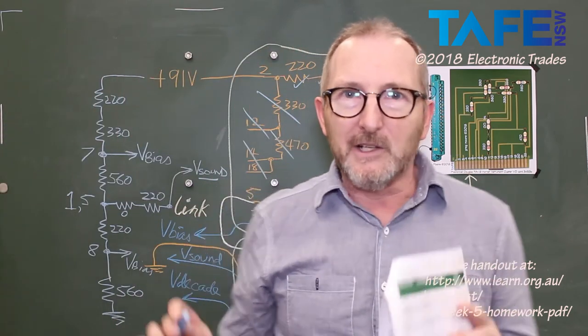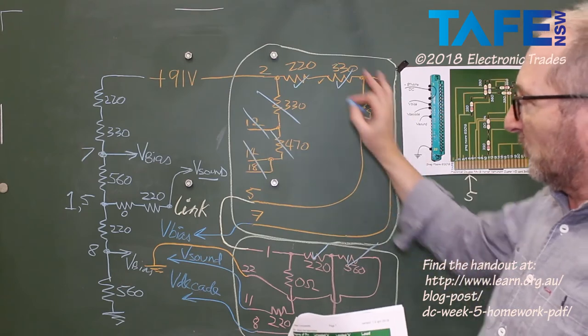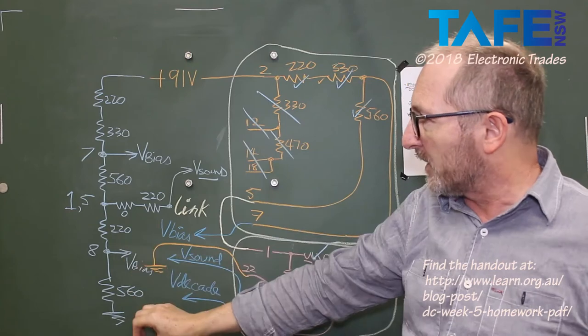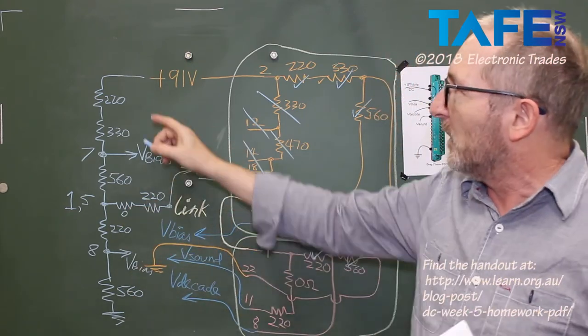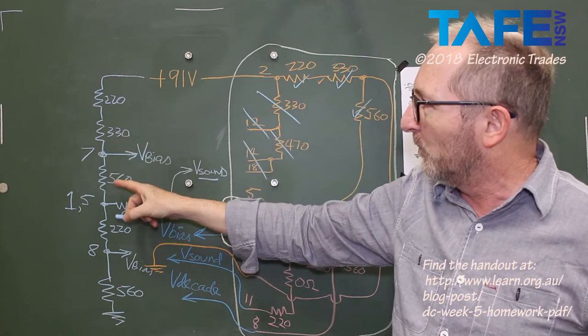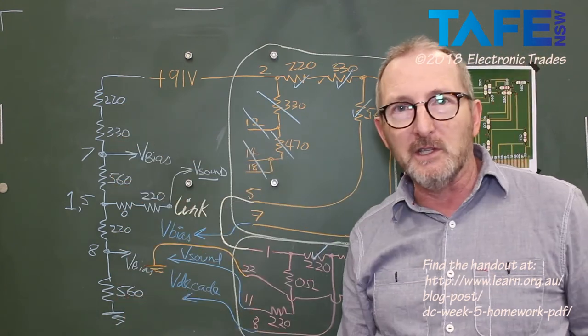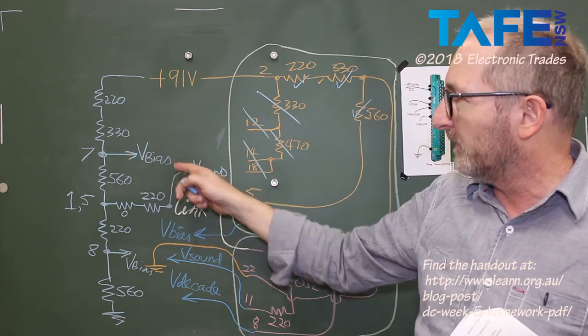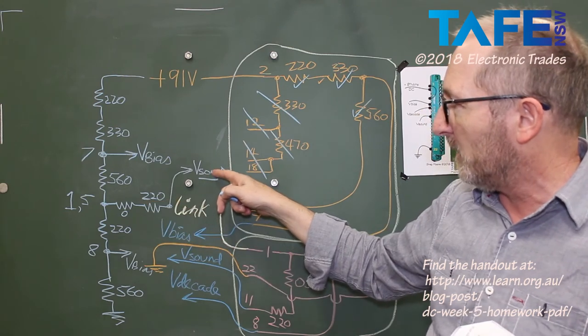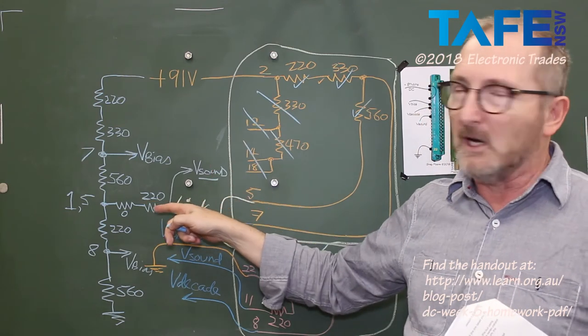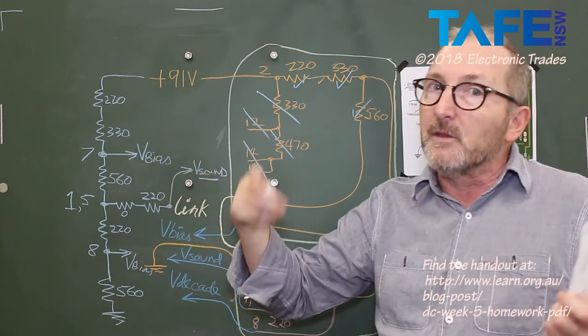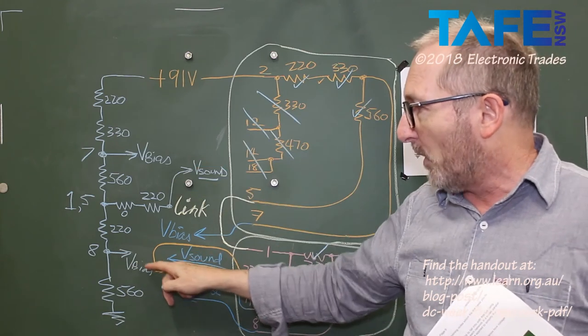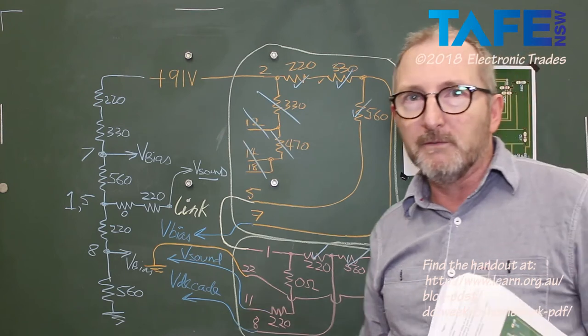Now, we can kind of ignore this first schematic diagram that I had. And what I've got in blue on this side of the board is the actual circuit. 91 volts at the top. Five resistors in that nice voltage divider. And we've got an output here called V-bias, an output here called V-sound. Got a 220 series resistor before V-sound, so later on there's going to be a little bit extra maths to work out the voltage at that point. And V-bias, this one here. So it's a simple voltage divider.